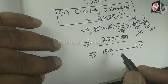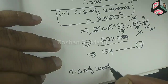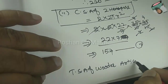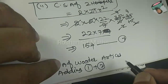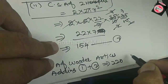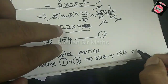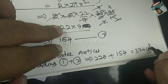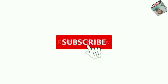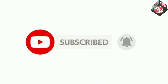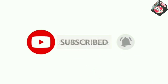Now we find the total surface area of the wooden article by adding result 1 and result 2: curved surface area of cylinder (220) plus curved surface area of two hemispheres (154) equals 374 square centimeters. If you found the explanation helpful, please subscribe to the channel and don't forget to press the bell icon so new videos reach you quickly.